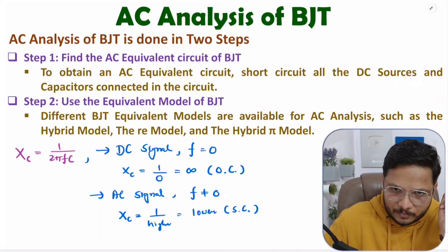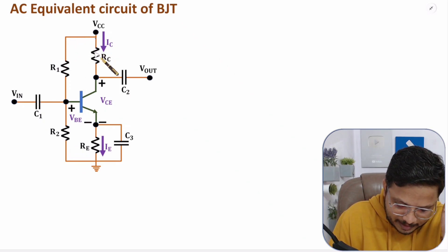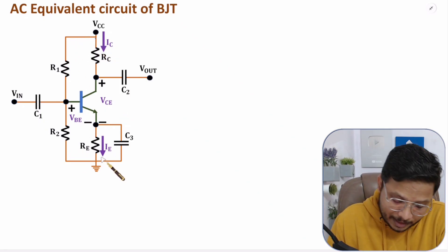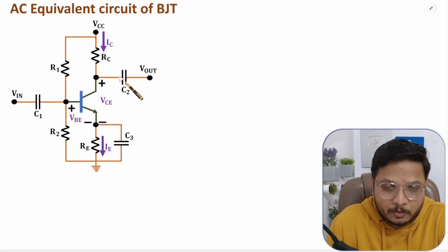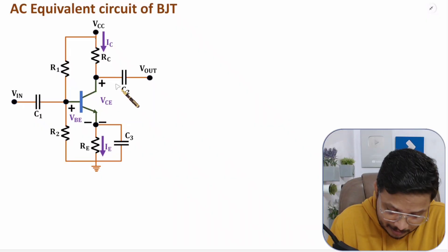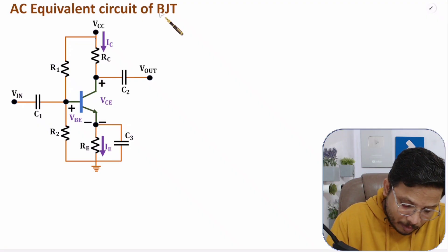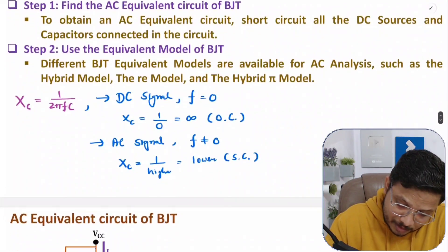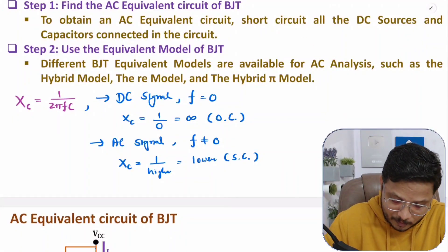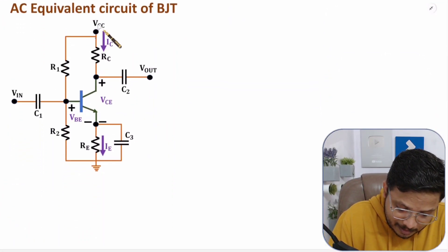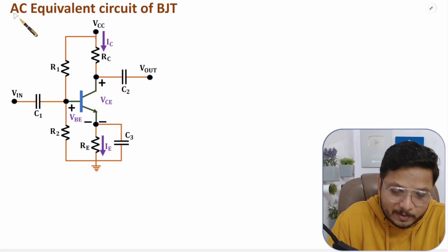Let me take one example. If you talk about a voltage divider bias circuit, this is the basic circuit. We have VCC as the DC supply, C1 and C2 are coupling capacitors, and C3 is a bypass capacitor. For the AC equivalent circuit, we need to short circuit VCC, and also short circuit C1, C2, and C3.